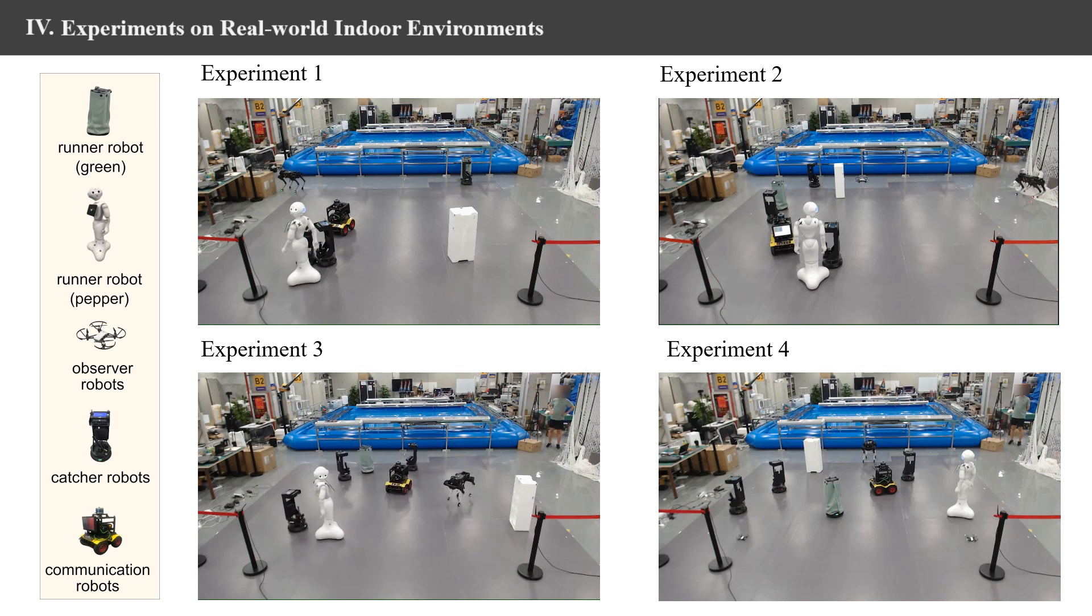In this experiment, the white runner robot is accidentally blocked by the communication robot. The catcher robot sees it and seizes the opportunity. It then uses the communication robot to catch the runner robot.